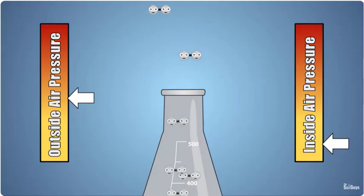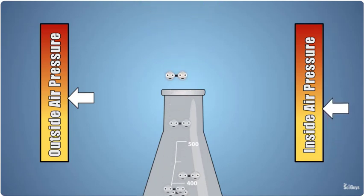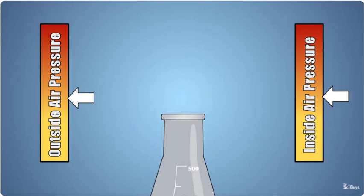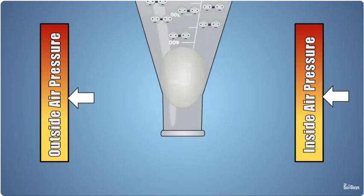Once the egg is in the bottle, the seal preventing air from entering the bottle is gone, and air rushes in, balancing the pressure inside and outside of the bottle. The opposite effect occurs when we remove the egg from the bottle.